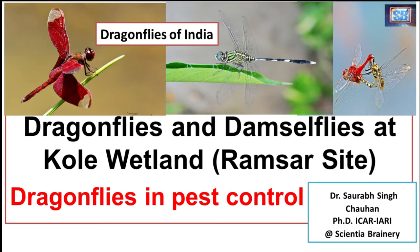Recently, dragonflies and damselflies, which belong to the order Odonata, have been identified and spotted at the Kol wetland area of central Kerala. That is also a Ramsar site. I will tell you what Ramsar sites are in the coming slides.